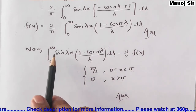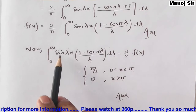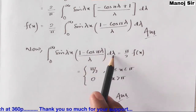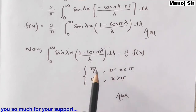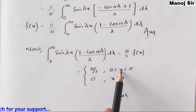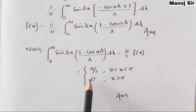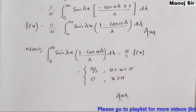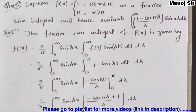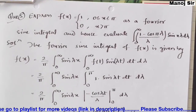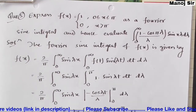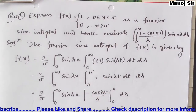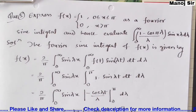So finally, integration from 0 to infinity of sin(λx)(1 − cos(πλ))/λ dλ = π/2 when x is from 0 to π, and equals 0 when x is greater than π. This was the second part of the problem and we have solved it successfully. Thank you so much for watching this video.